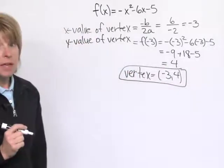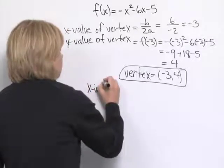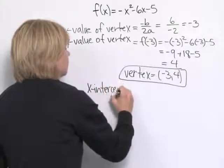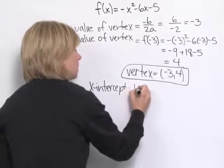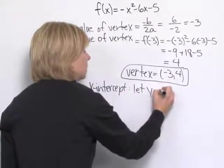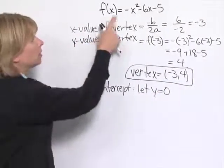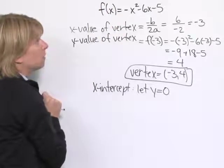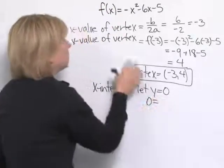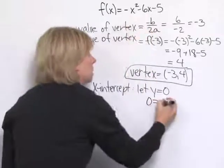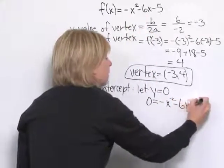Now we'll find the x and y intercepts. For the x-intercept, we let y = 0. Remember, y is the same as f(x), so I'm putting a 0 in for the left side of the equation. So I have 0 = -x² - 6x - 5.